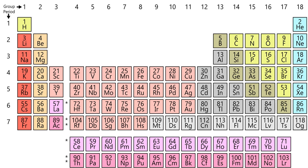Russian chemist Dmitry Mendeleev was the first to publish a recognizable periodic table in 1869, developed mainly to illustrate periodic trends of the then-known elements. He also predicted some properties of unidentified elements expected to fill gaps within the table, and most of his forecasts proved to be correct. Mendeleev's idea has been slowly expanded and refined with the discovery or synthesis of further new elements and the development of new theoretical models to explain chemical behavior. The modern periodic table now provides a useful framework for analyzing chemical reactions, and continues to be widely used in chemistry, nuclear physics, and other sciences.